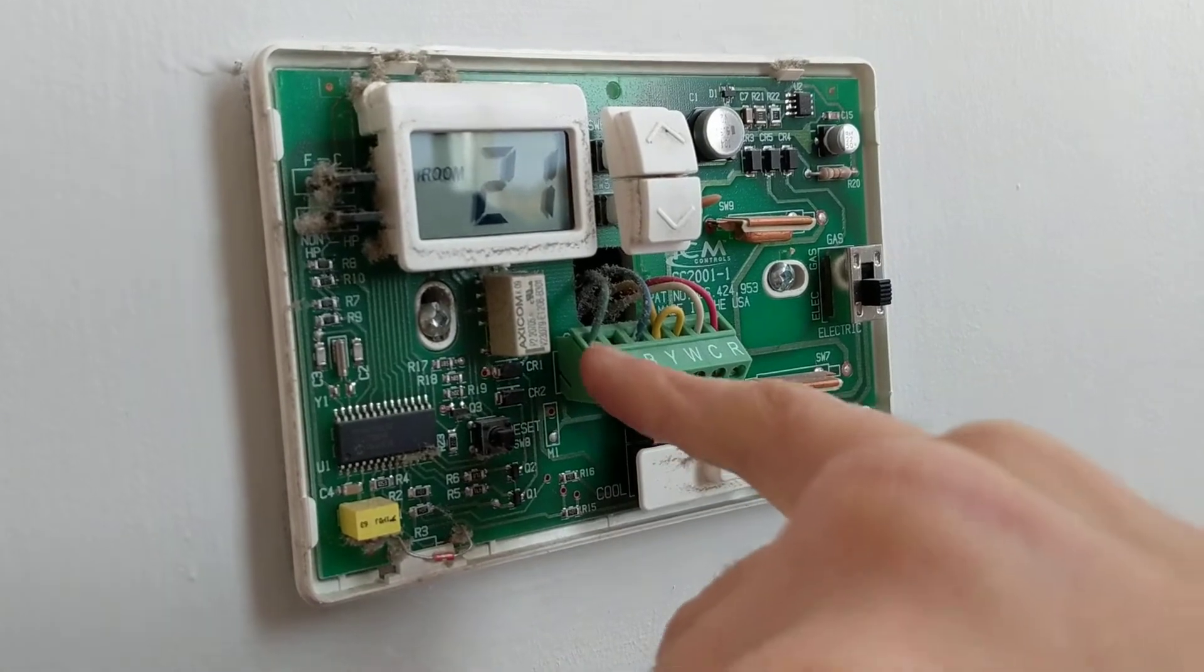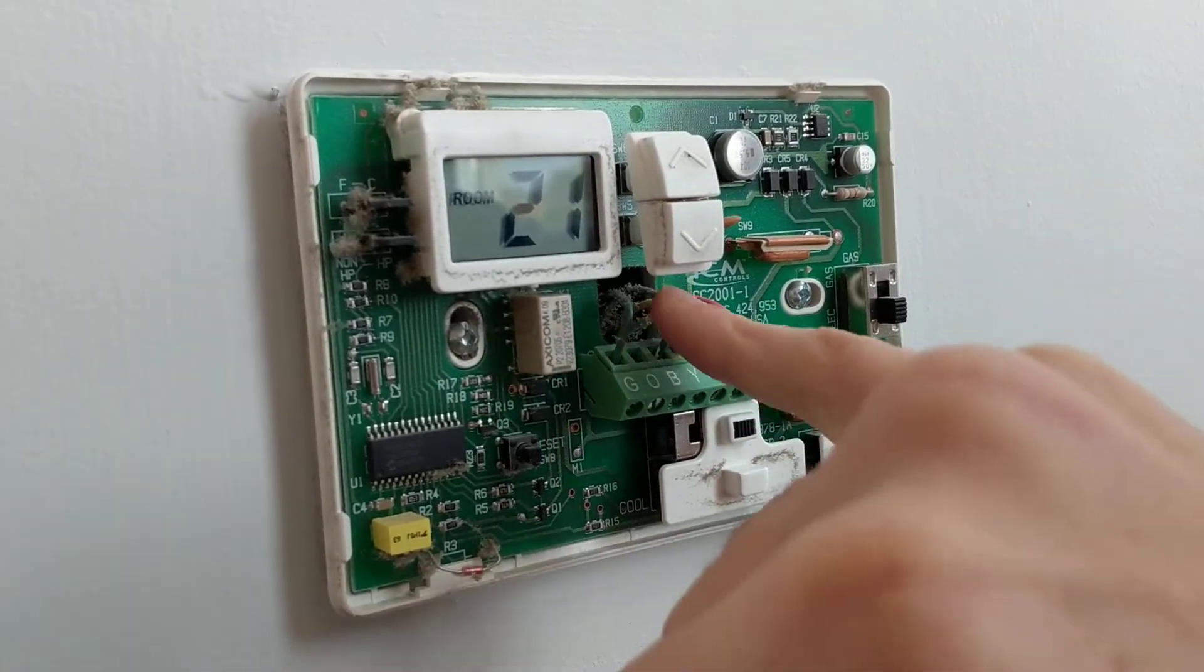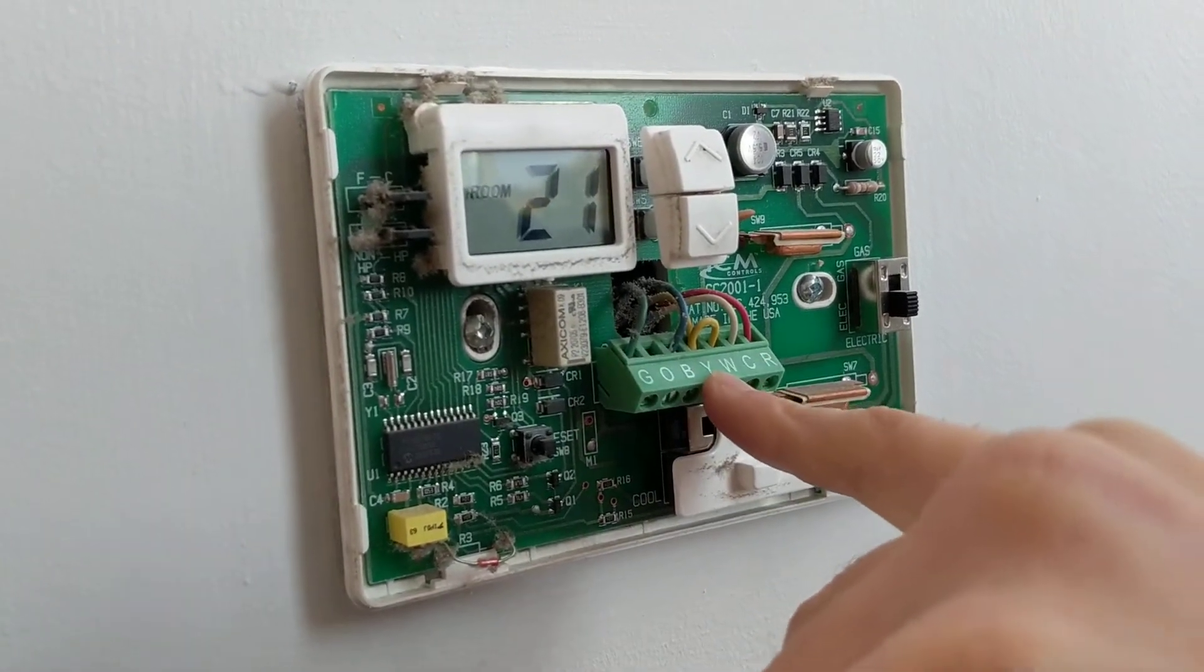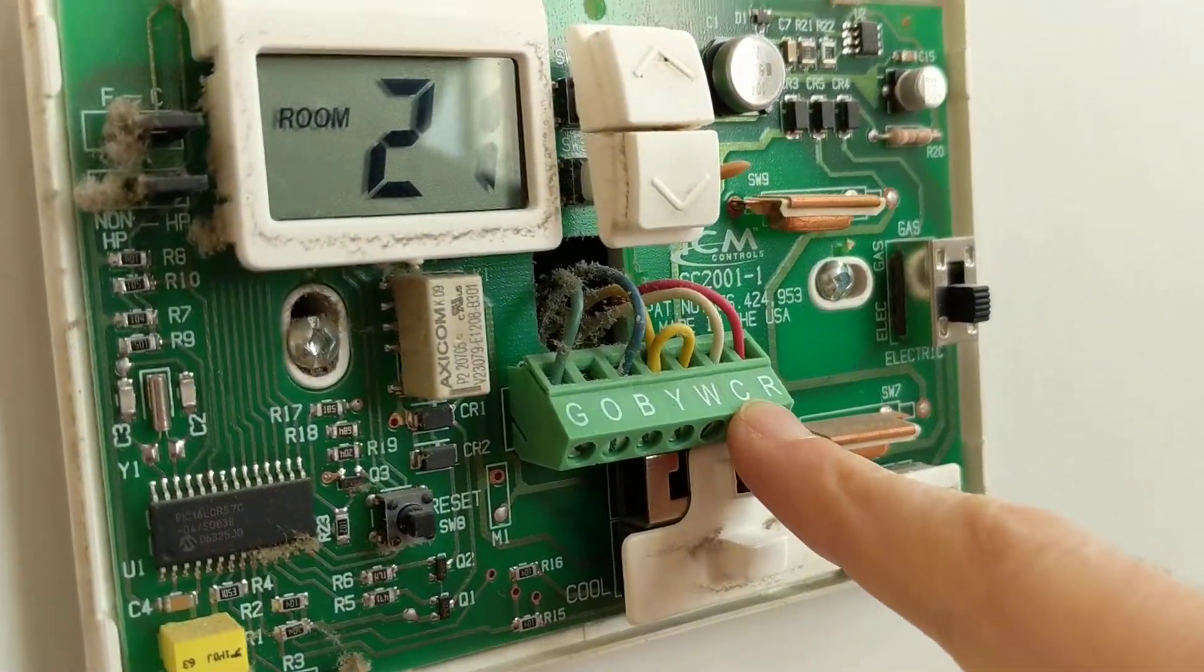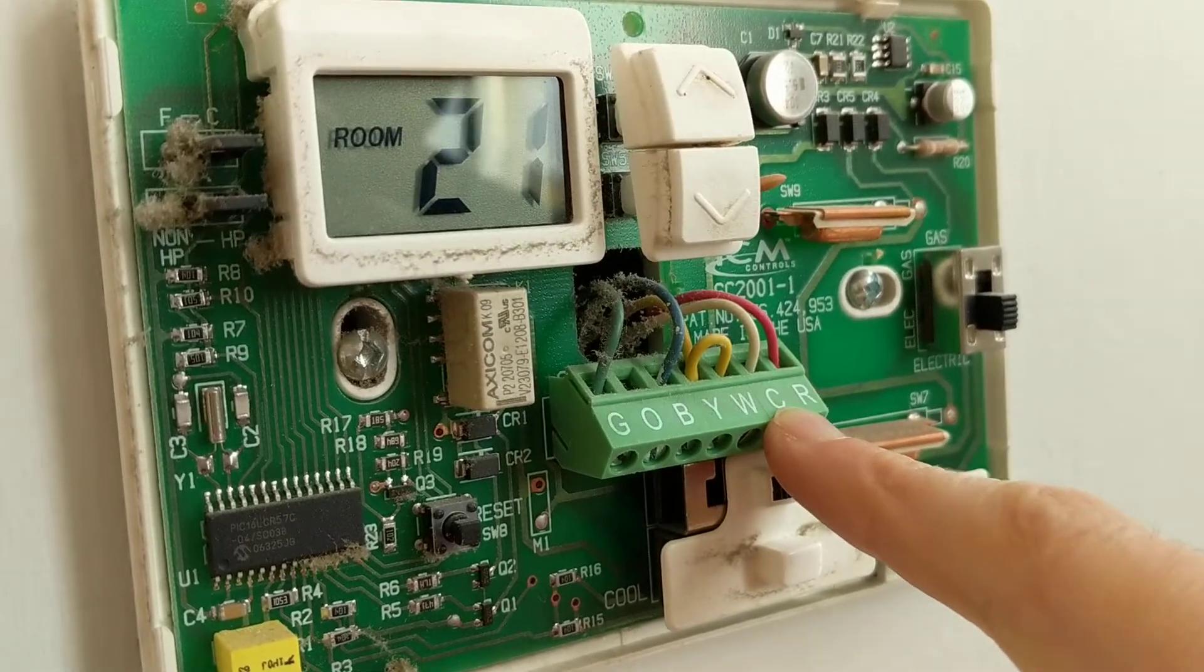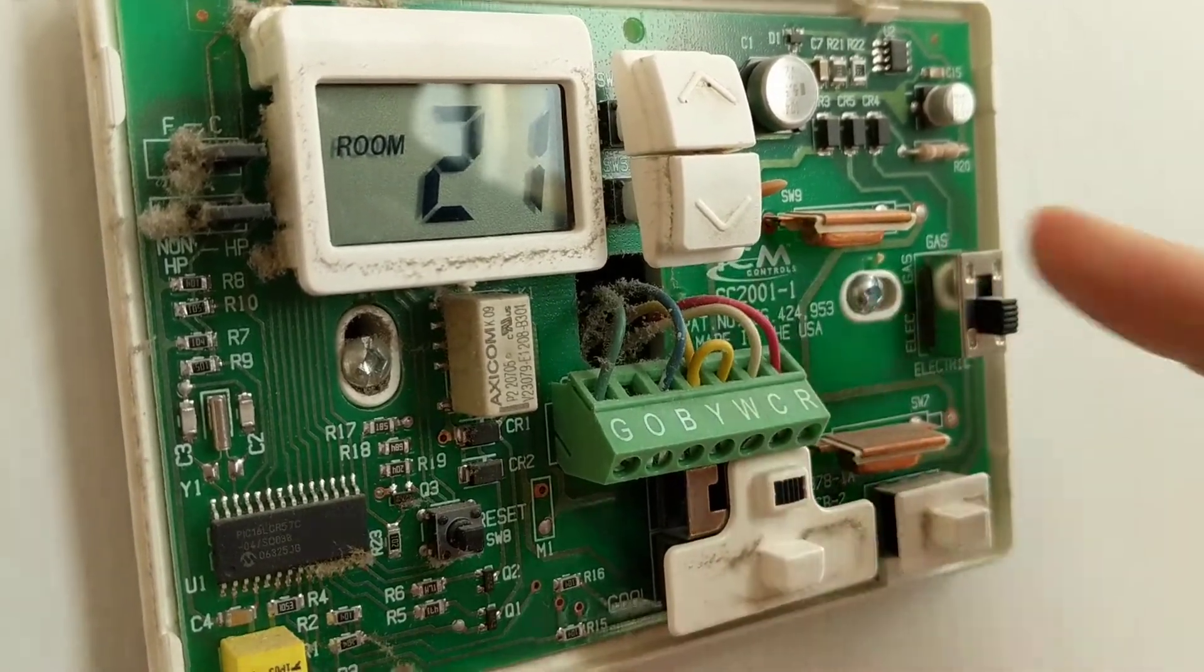So we've got G green, B for blue, Y and W, C is common and that actually has electrical power to it but it's only 24 volts and our red kind of makes sense.